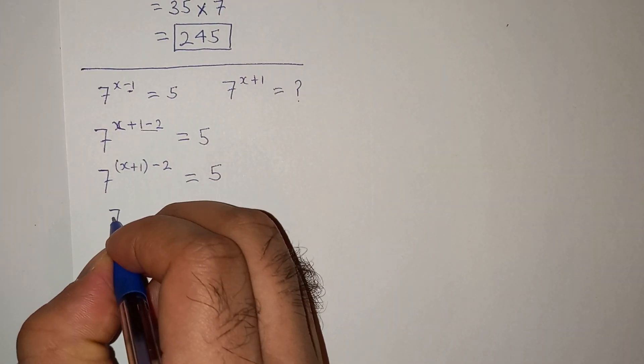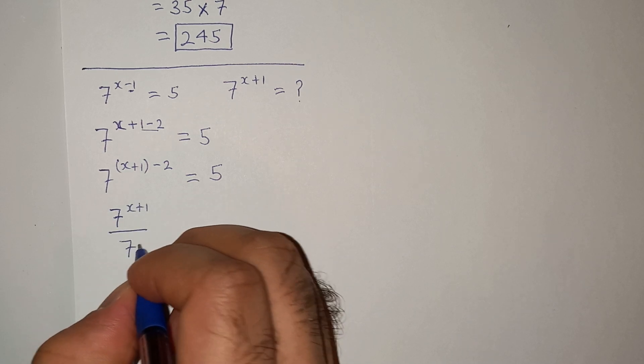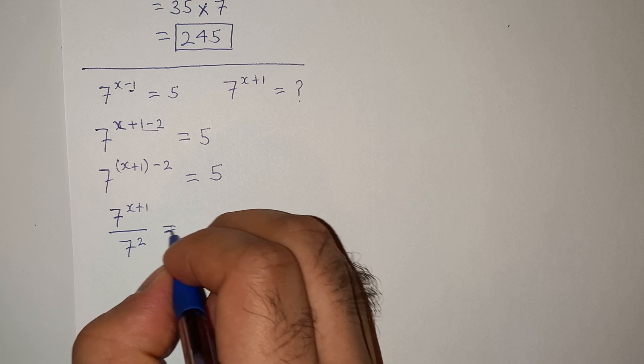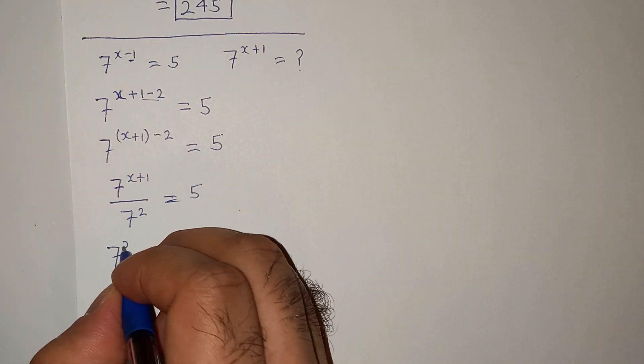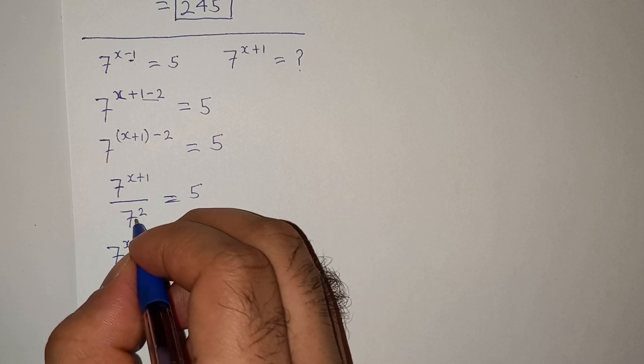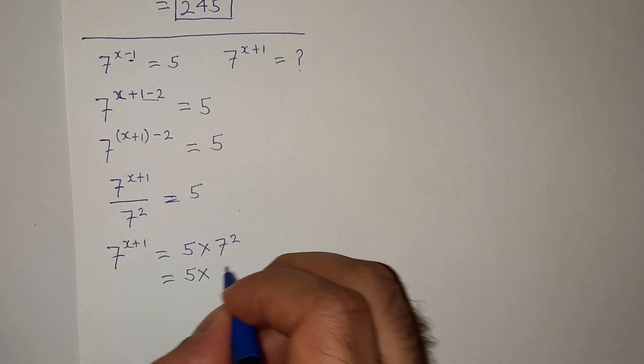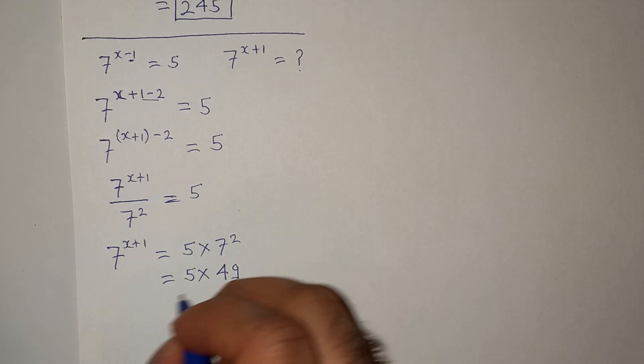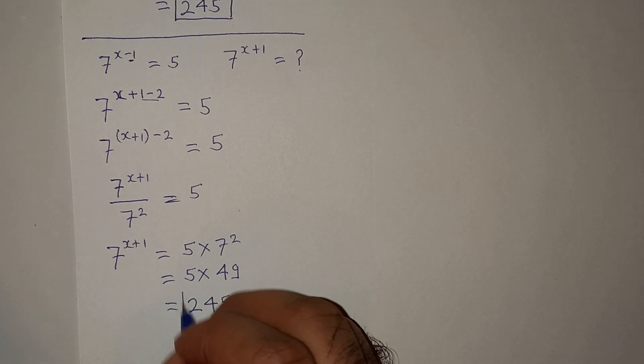Now this will be 7 power x plus 1 divided by 7 square equals to 5. So 7 power x plus 1 equals to 5 multiplied by 7 square. So 5 multiplied by 7 square is 49, the value is 245.